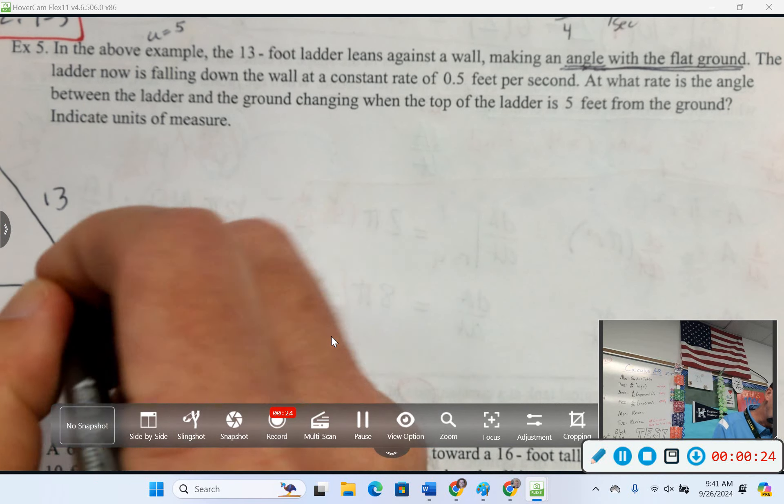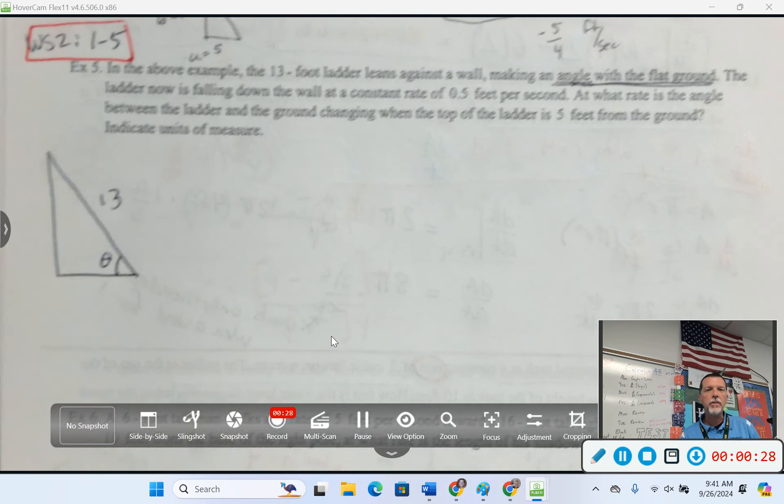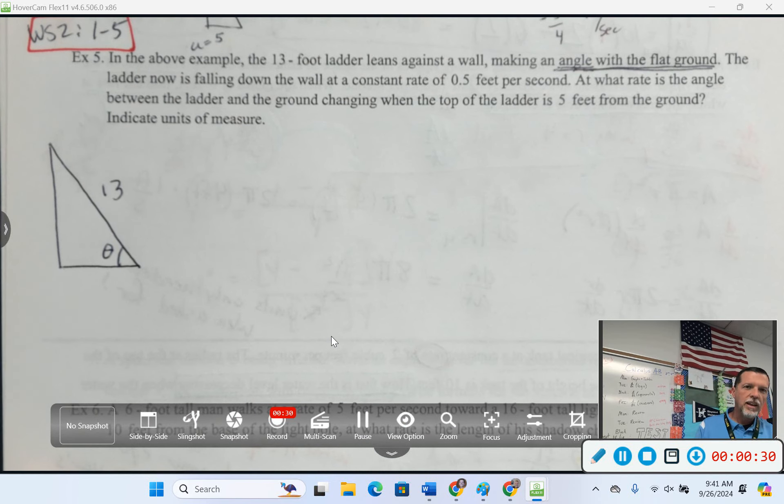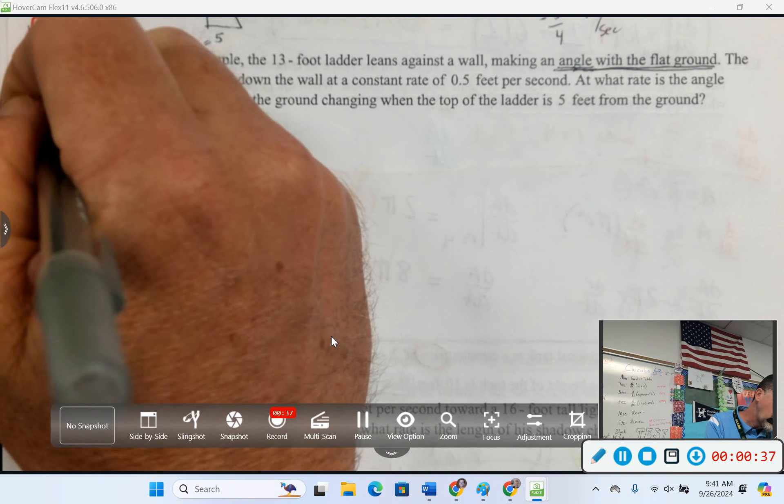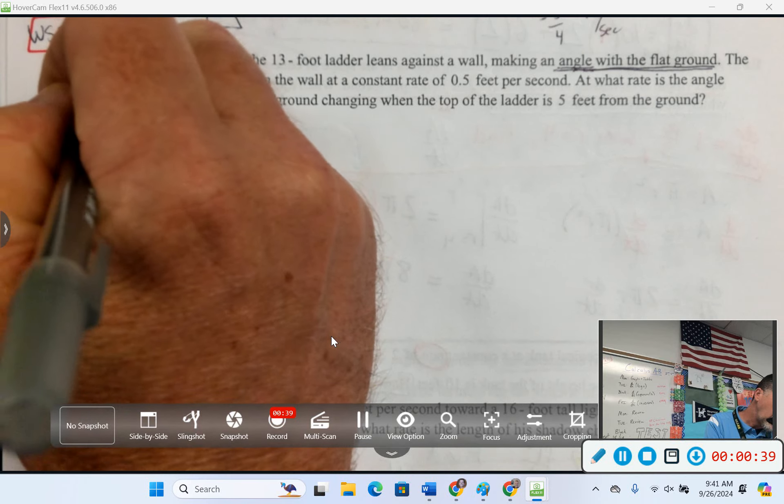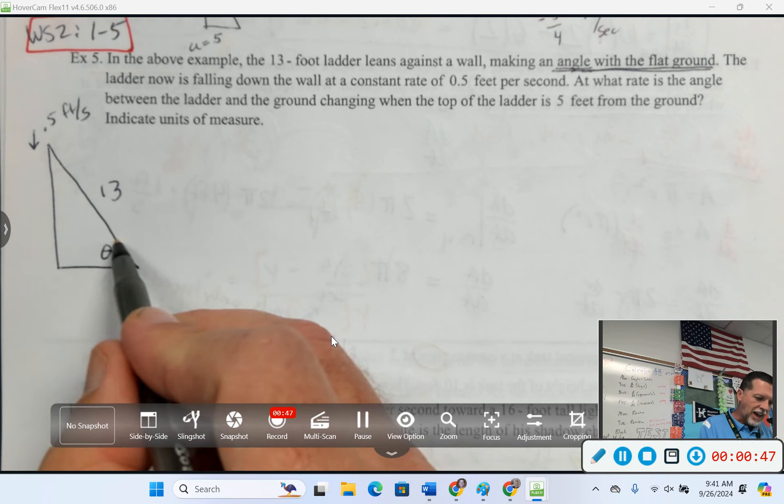So, 13-foot ladder, the angle with the ground is the one we're going to be looking at. The ladder now is falling down the wall at a constant rate of 0.5 feet per second. At what rate is the angle between the ladder and the ground, that angle between the ladder and the ground, changing?